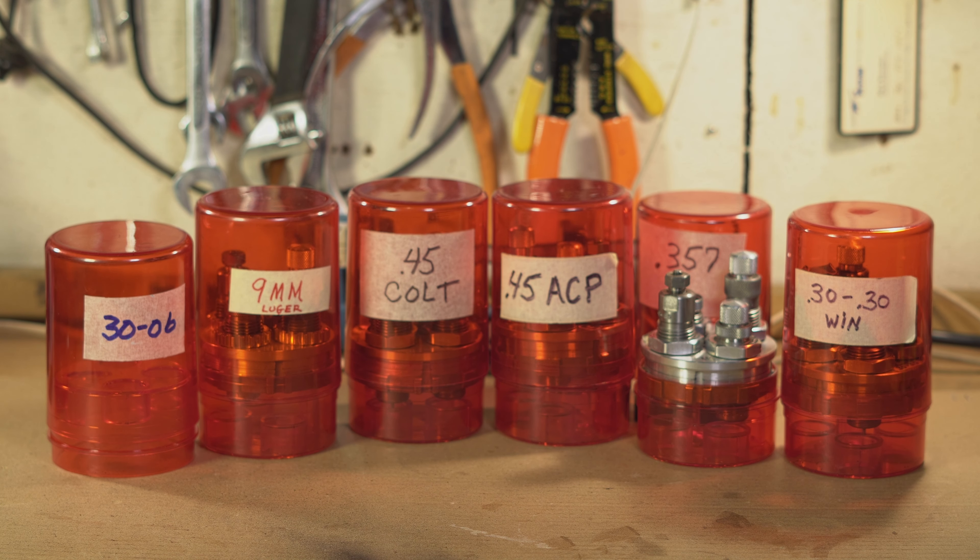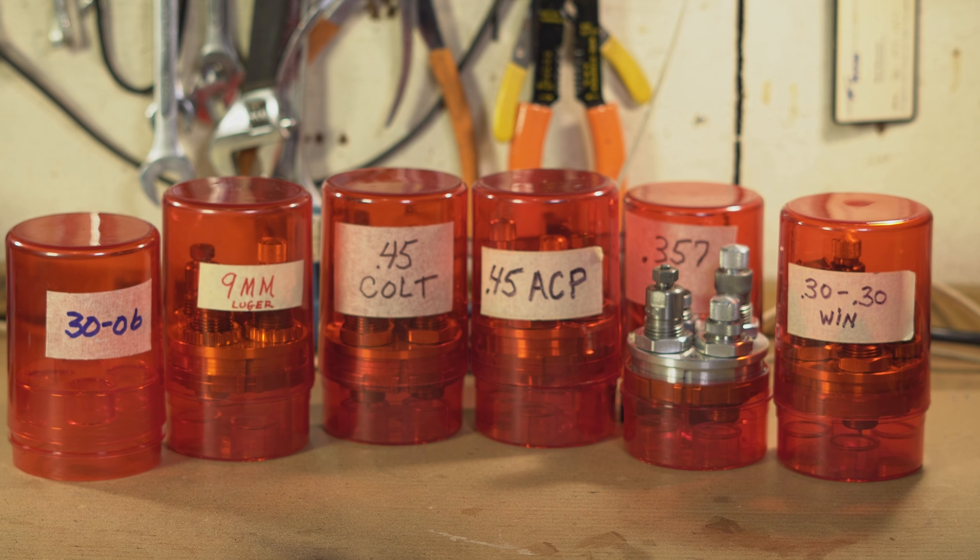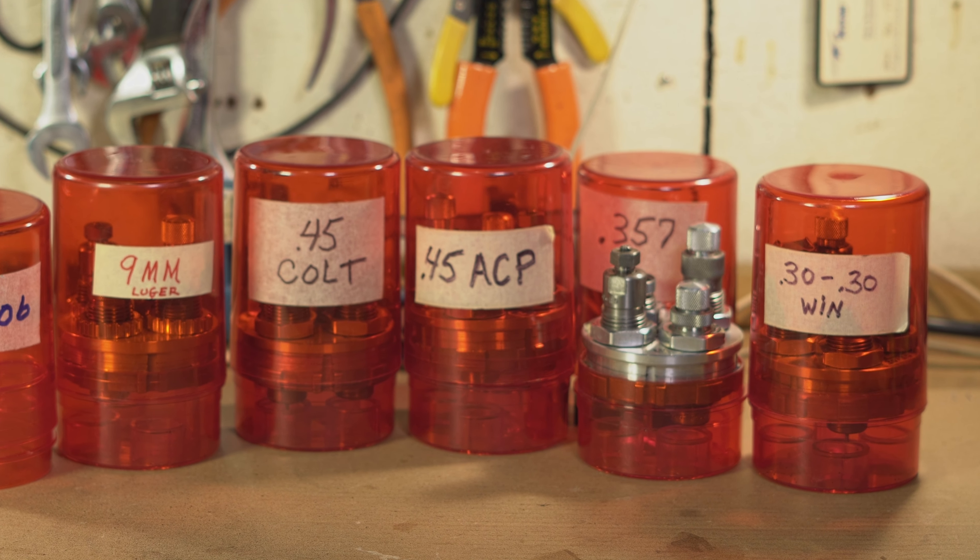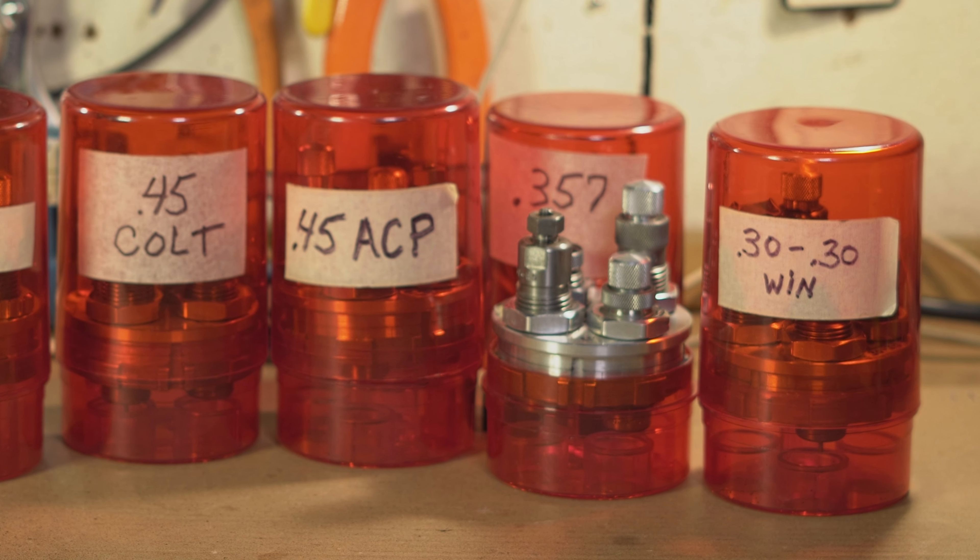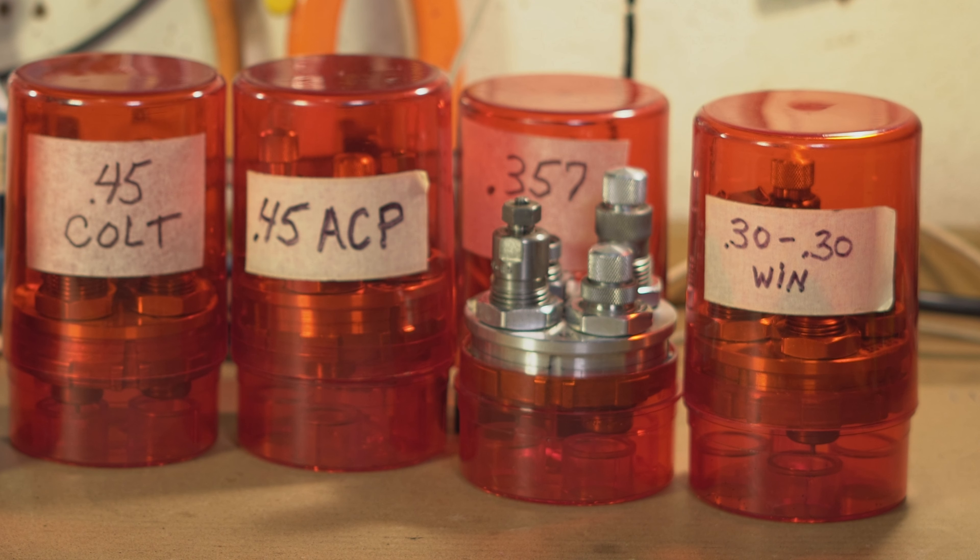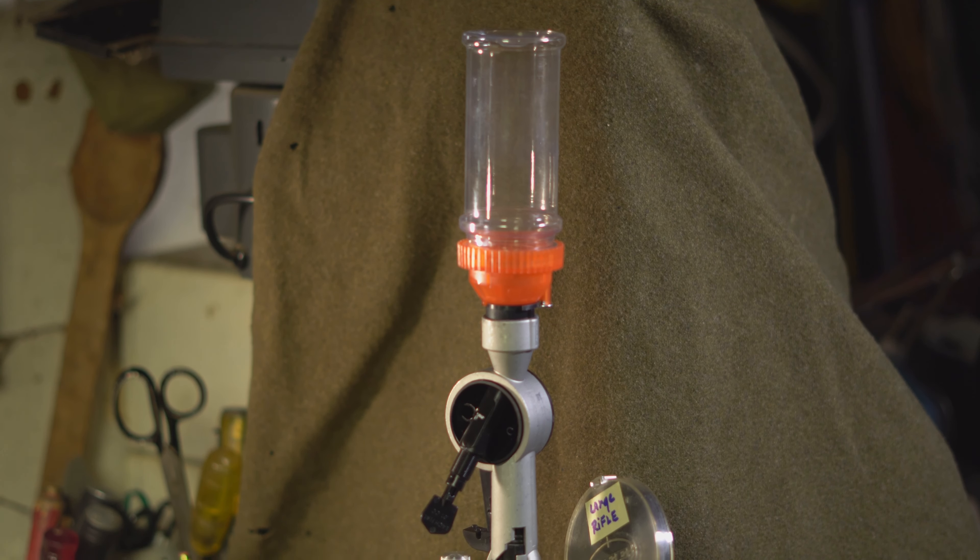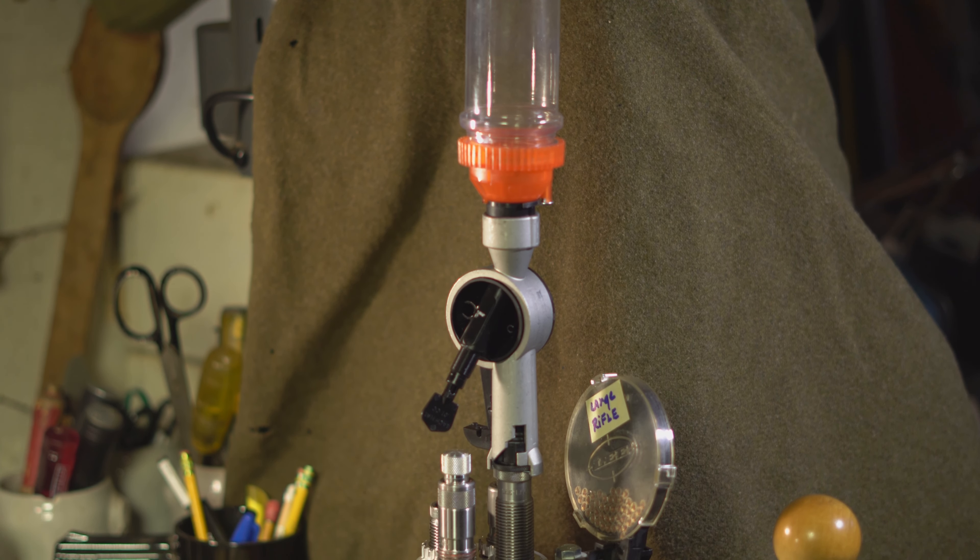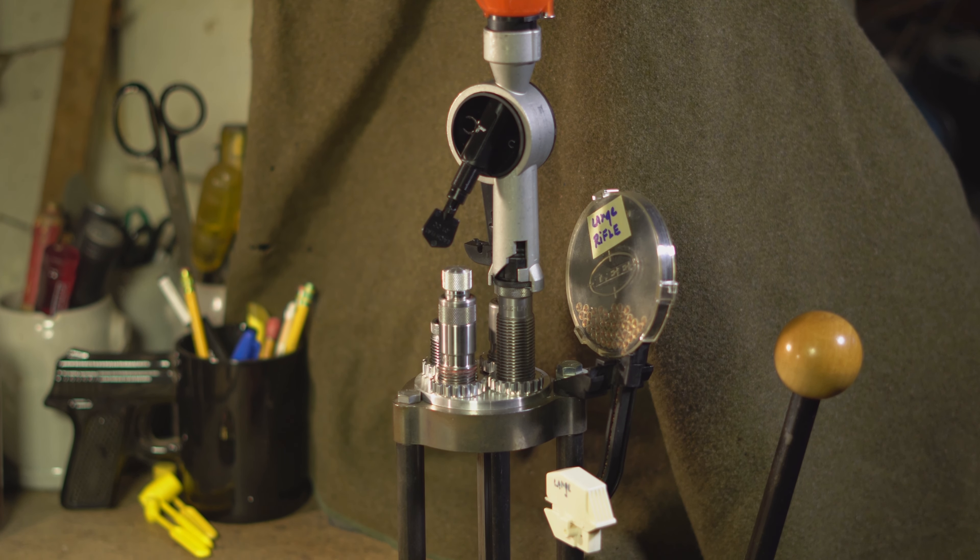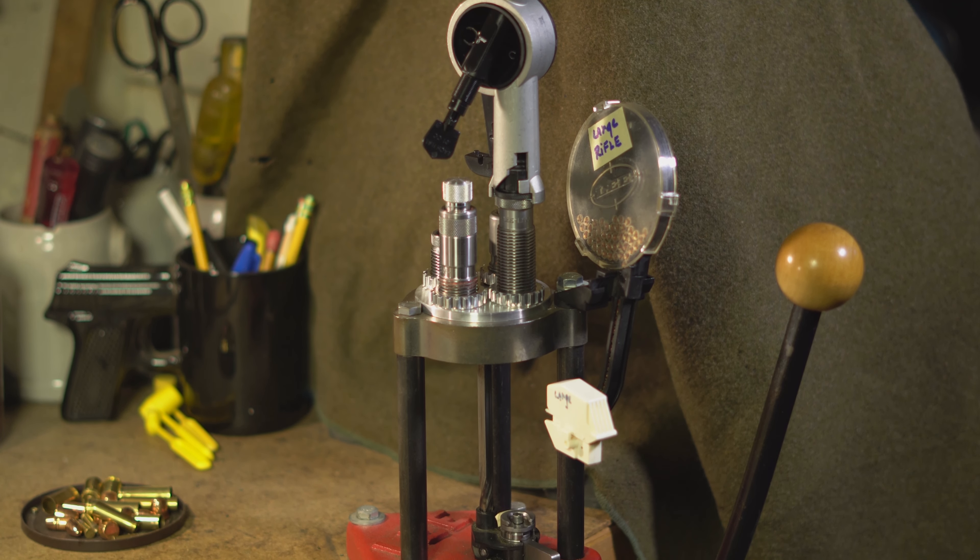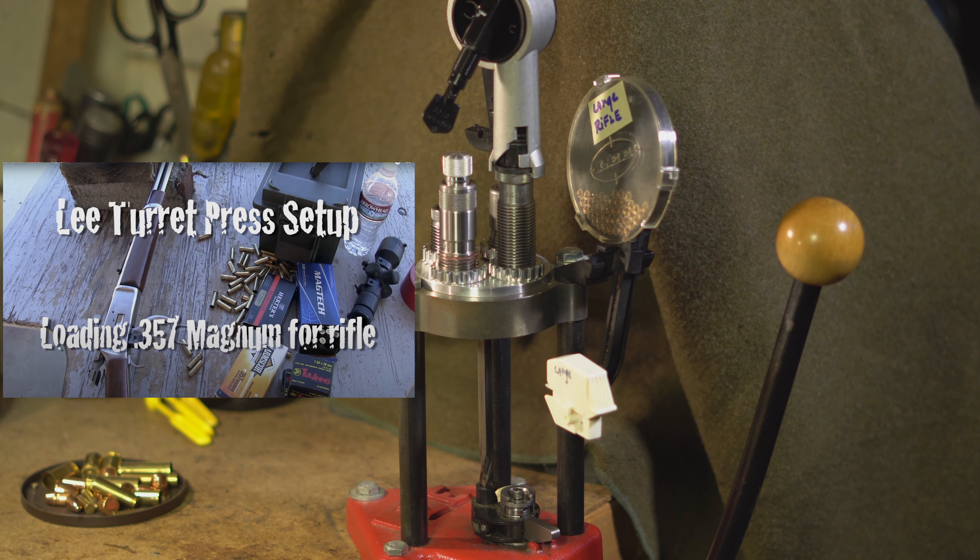I always buy a separate Lee 4-hole turret for each caliber I reload because it's a cheap way to save a setup that's been properly calibrated to a specific load. And I store these setups in the Lee Red Die Round box. If this is your first time reloading with the Lee Turret Press, just follow their instructions, or please see my complete setup video for reference: Lee Turret Press 357 Magnum.